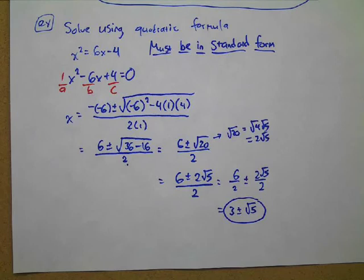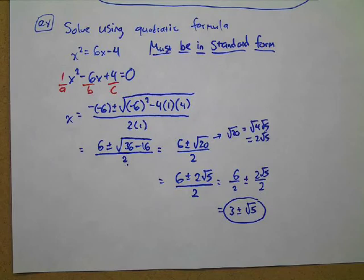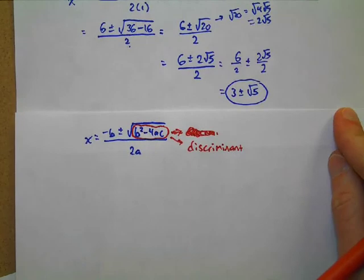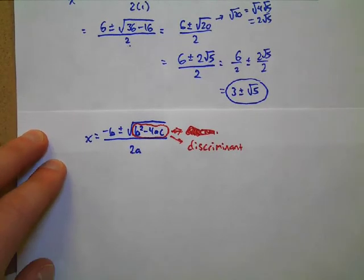One more thing I want to show you before you start the assignment: a part of this quadratic formula. You guys remember the part underneath the square root — there's a name for it. It starts with a D. The discriminant. That's right. The discriminant: b² minus 4ac.